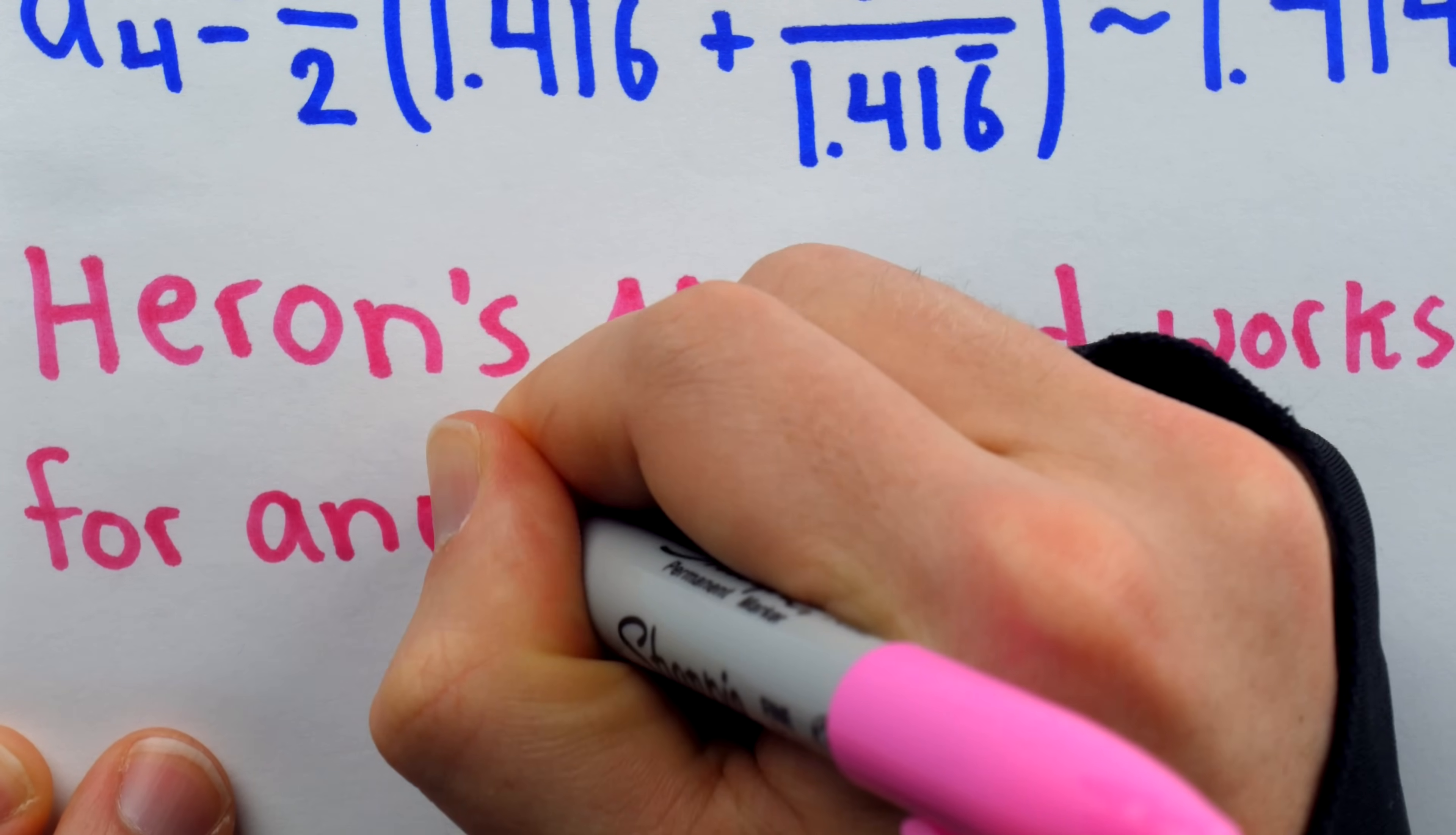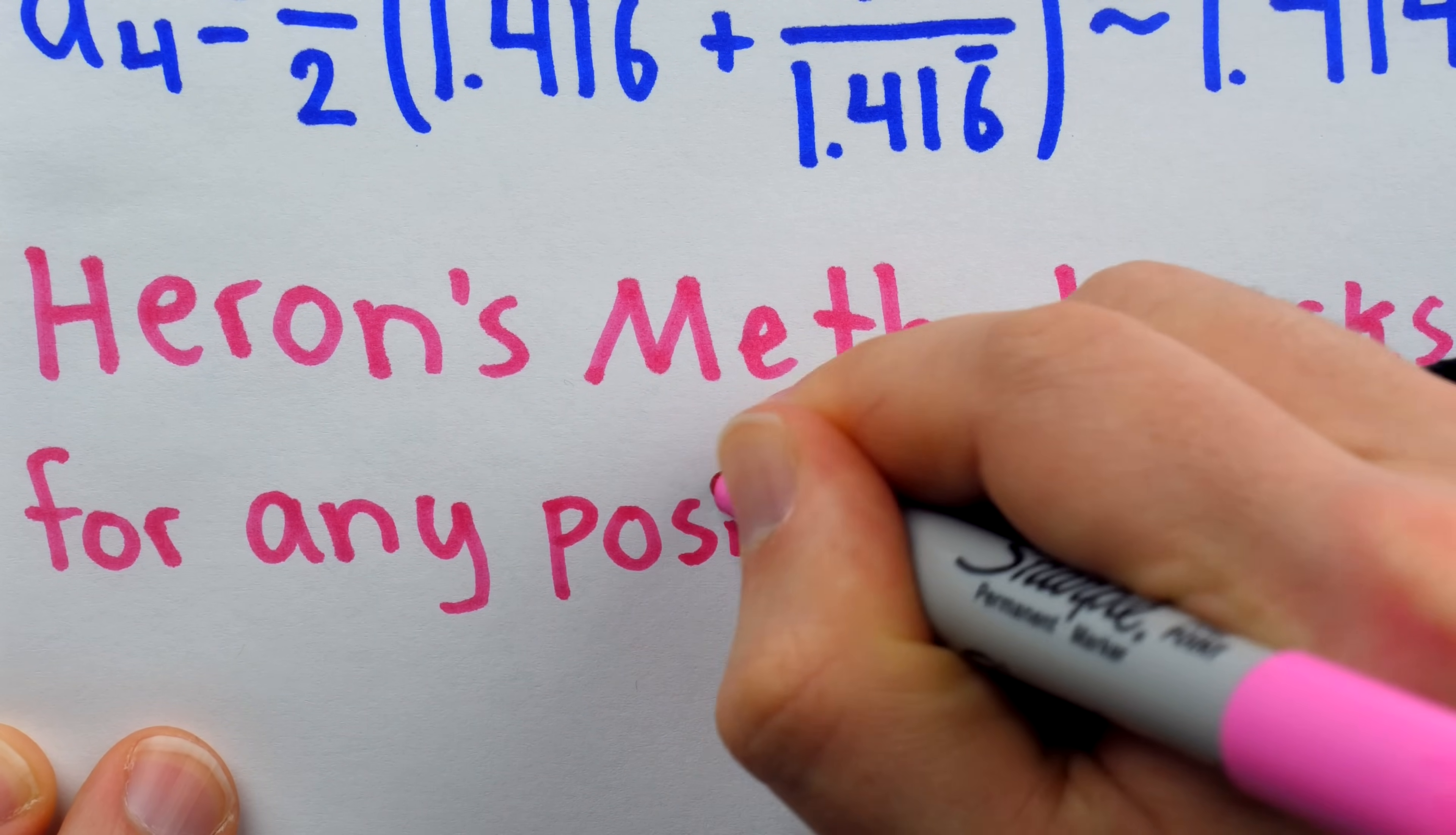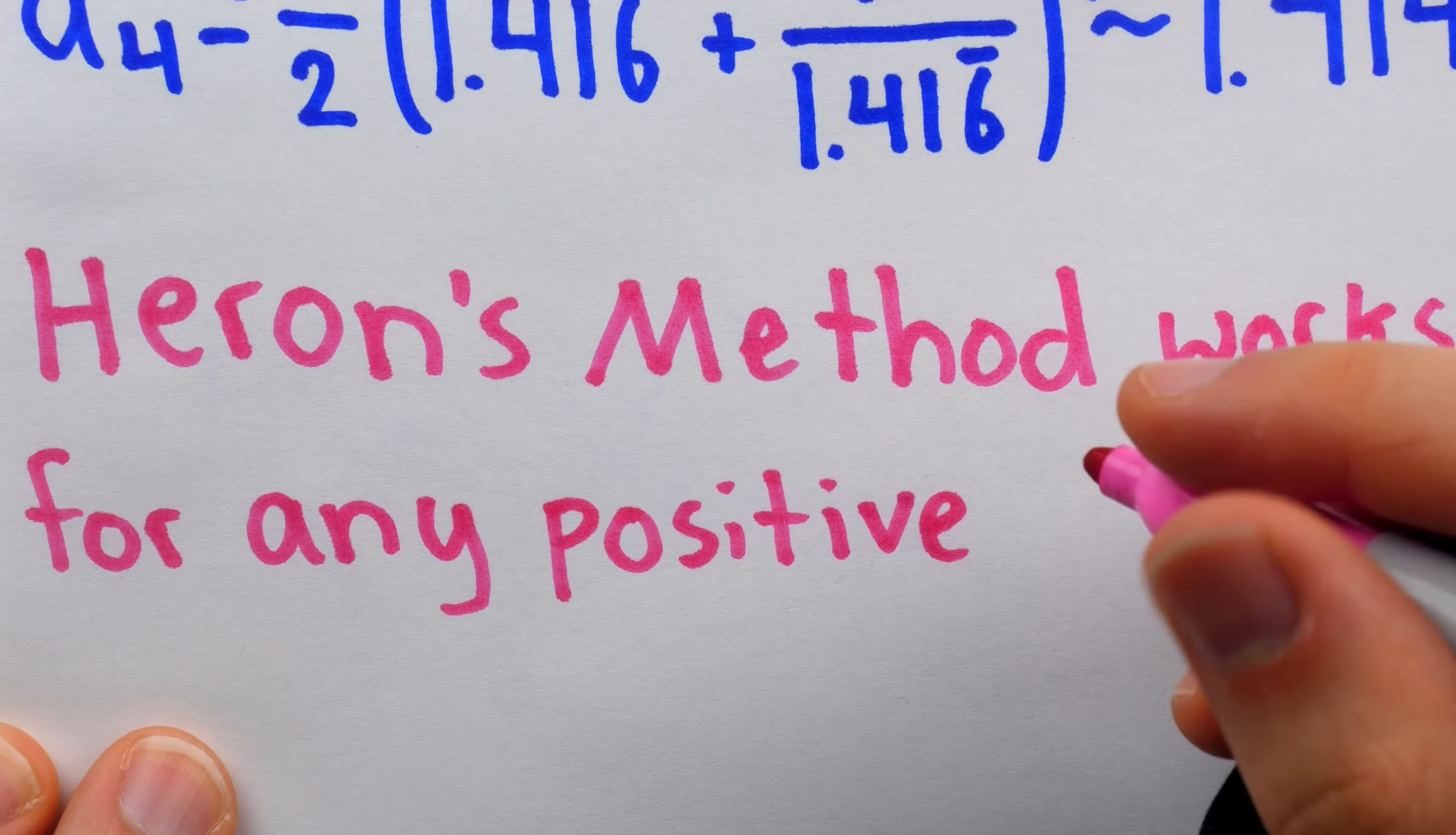Of course, negative numbers don't have square roots, although, if your initial guess is a negative, the sequence will converge towards the negative root. So, in the case of 4, for example, the negative root would be negative 2.